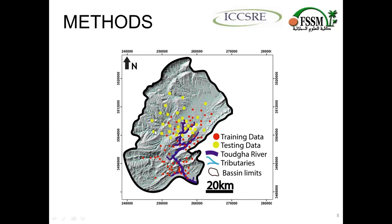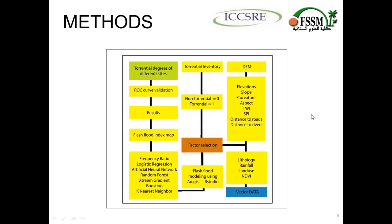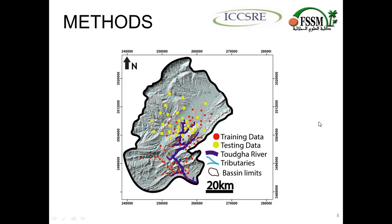This is the inventory map, which is separated into two data categories. In red is the training data — 70% — and in yellow is the testing data. This shows the Tudra River, its tributary, and the basin limit. This inventory map of historical flood events was gathered through satellite imagery and field mission data collection.